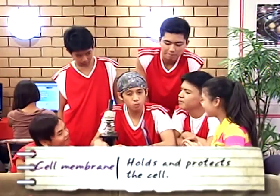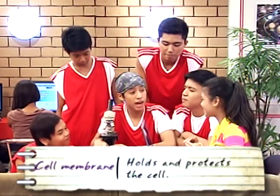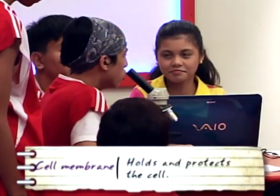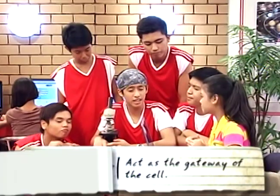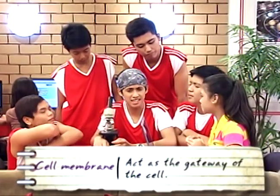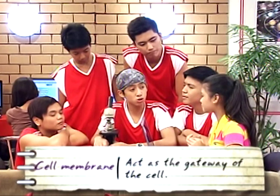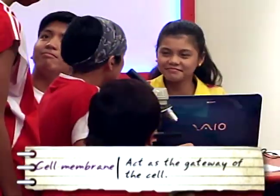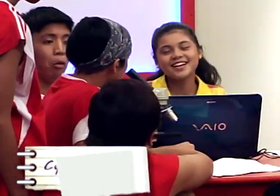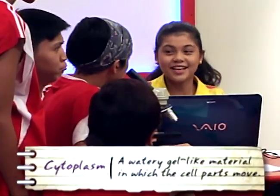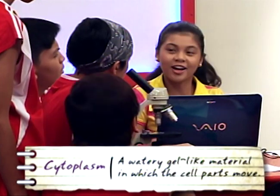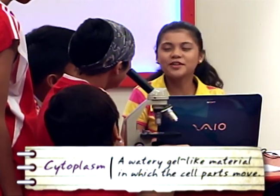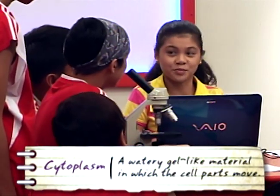There's the cell membrane, which holds and protects the cell. It also acts as the gate of the cell, since it controls the movement of materials in and out of the cell. The cytoplasm is a watery, gel-like material in which the cell parts move.